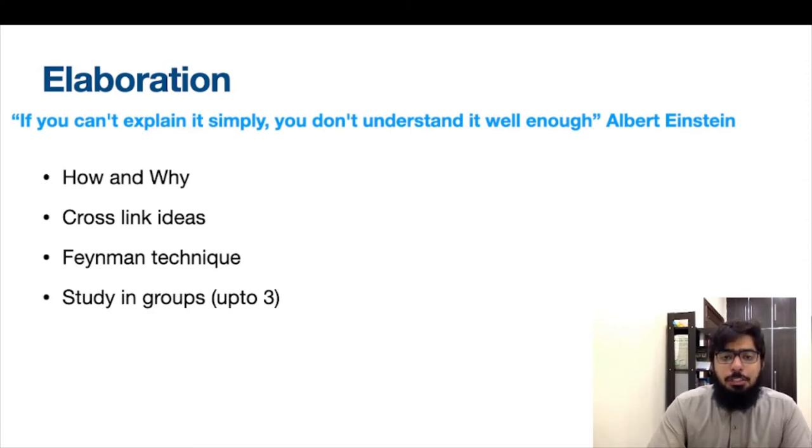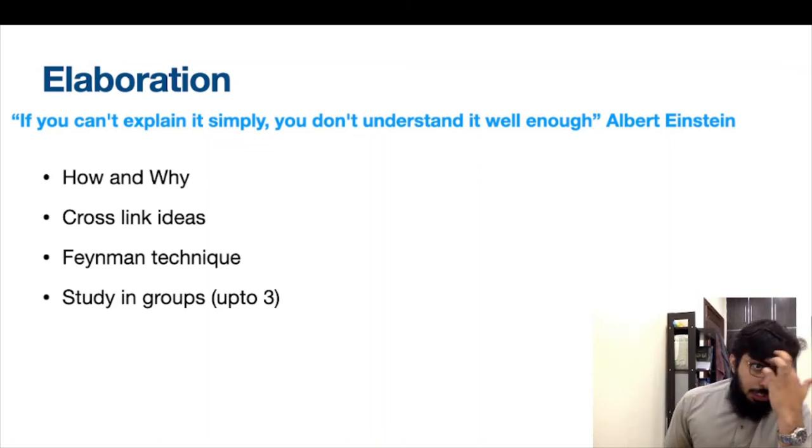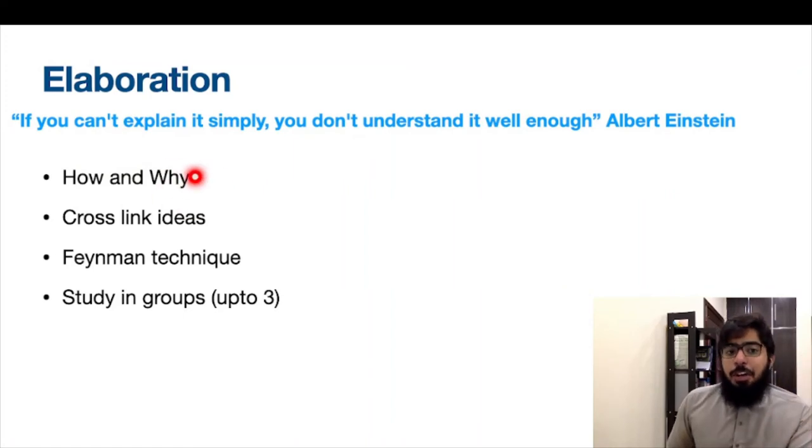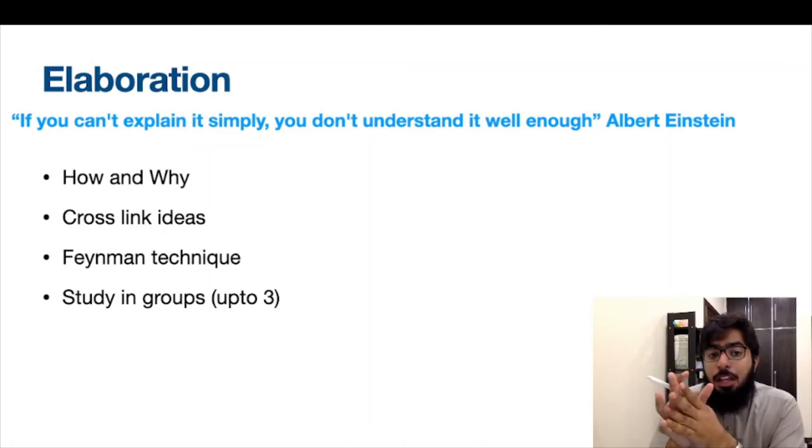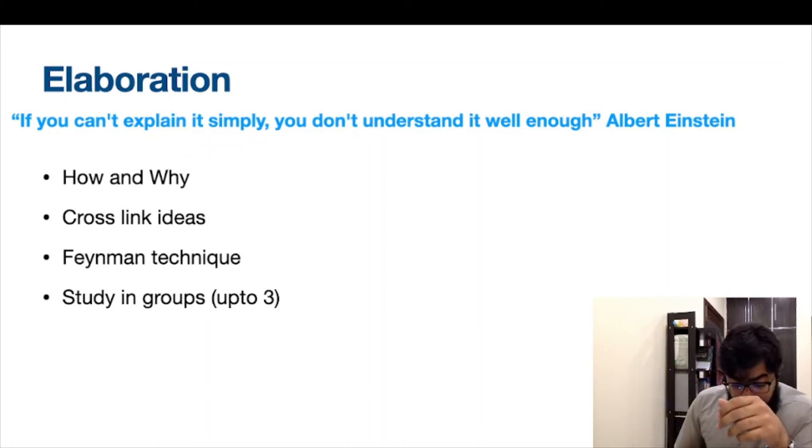Well, our next study technique is elaboration. Elaboration is explaining the concept in depth. We all know a quote attributed to Albert Einstein: If you can't explain it simply, you don't understand it well enough. So for whatever topic you are studying or learning, what you need to do is go into the intricacies and depths of that. You won't be able to do elaboration for every topic you study, but the main and important topics, if you elaborate them, they would get into your memory really well and you won't forget them and you would understand them properly and you'd be able to apply them. So you have to ask yourself the questions, how and why? How is it happening? And why is it happening? What's the path? What is the basic mechanism behind it? And then you need to cross-link ideas. When you've learned four or five concepts, you need to cross-link them together and get better concepts into your brain.